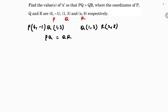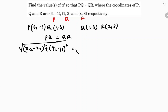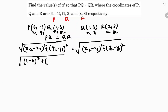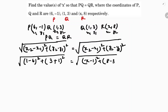Using the distance formula: under root of (x2 minus x1) whole square plus (y2 minus y1) whole square equals under root of (x2 minus x1) whole square plus (y2 minus y1) whole square. Substituting the values, we get: under root of (1 minus 6) whole square plus (3 minus minus 1) whole square equals under root of (x minus 1) whole square plus (8 minus 3) whole square.